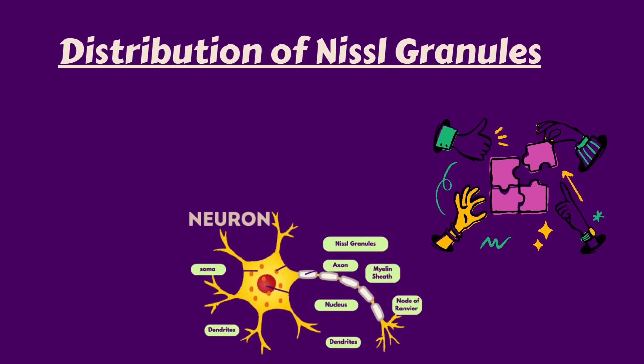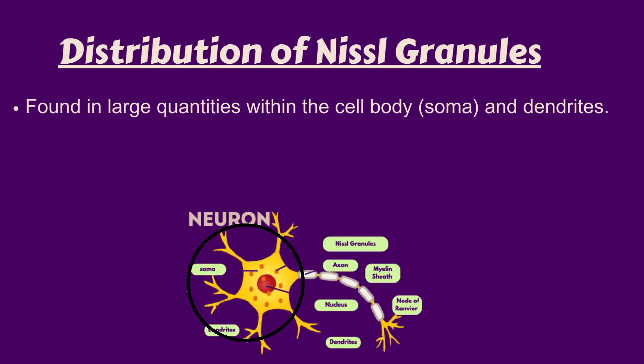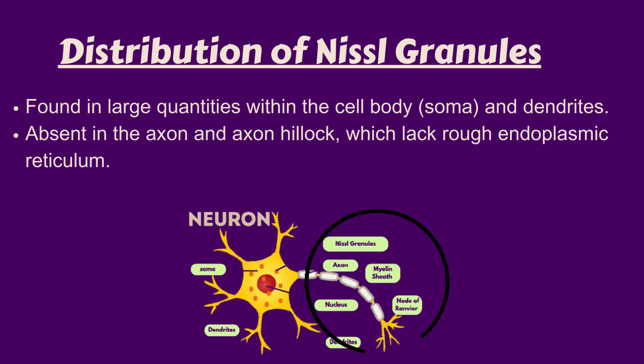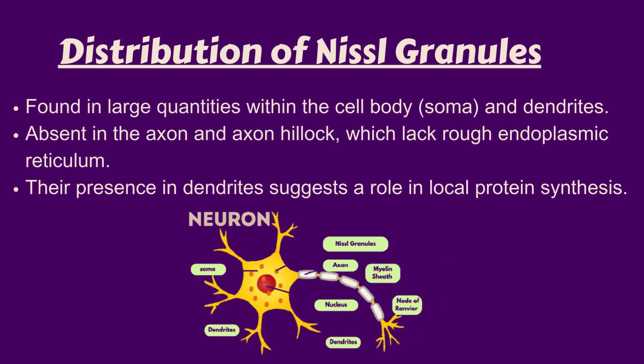Distribution of Nissl Granules. Nissl granules are densely packed within the cell body soma and dendrites, reflecting their high metabolic activity. However, they are completely absent in the axon and axon hillock. This distribution highlights their role in localized protein synthesis, supporting neuronal maintenance and repair.